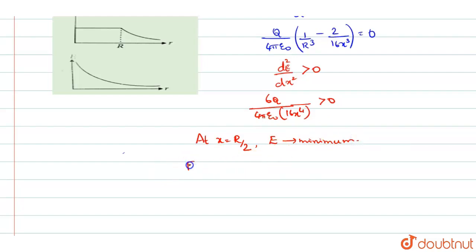But for X greater than R, then E becomes the charge present on that sphere plus the point charge Q by 16 divided by 4 pi epsilon naught into X square. So, this will be the equation.